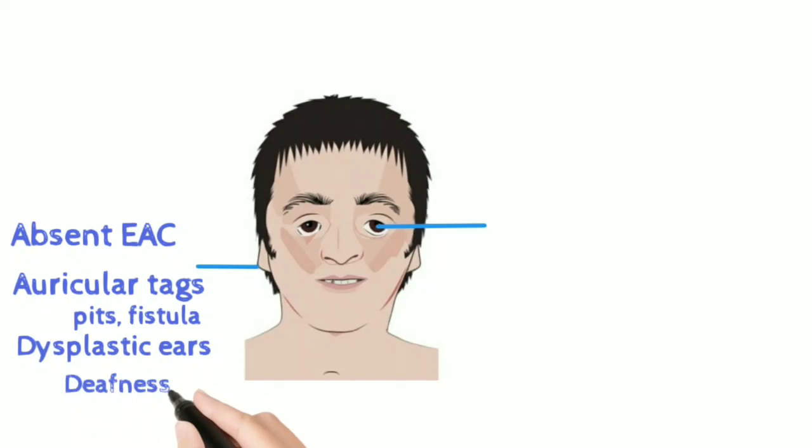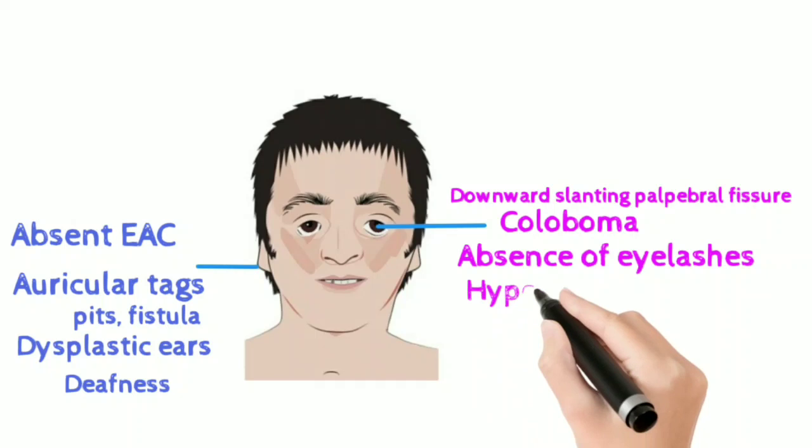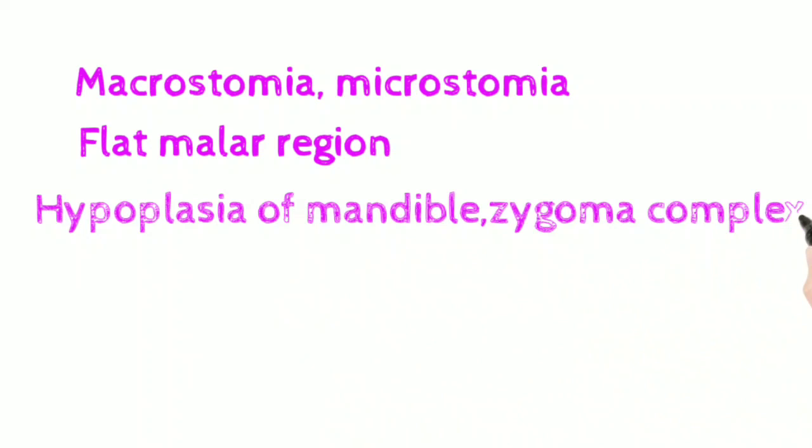Let's see what are the characteristic features in the eyes. There could be downward slanting of the palpebral fissure, coloboma of the eyelid, partial or complete absence of eyelashes in the lower lid, and hypotelorism. Other features include macrostomia, microstomia, flat malar region, hypoplasia of the mandible or micrognathia, high arched palate, and cleft palate.